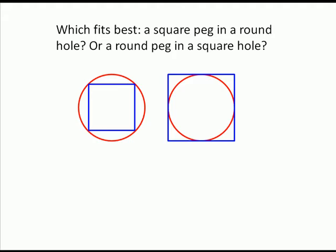Let's start on the left with a square peg inside a round hole. Consider a circle whose diameter measures one unit and call the length of the side of the square s.